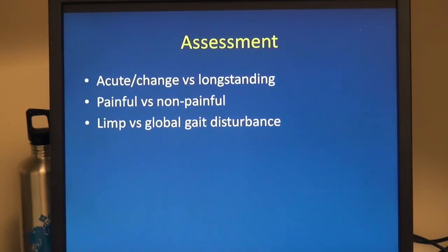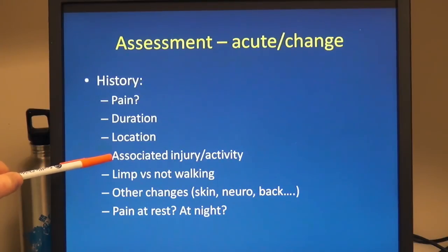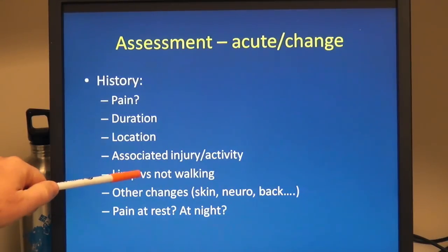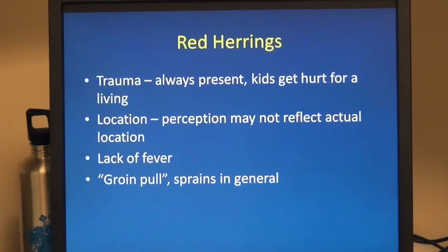It's helpful to look at your history and determine whether this is an acute change or a long-standing gait disturbance. Is it painful or non-painful? Is this a limp or a global gait disturbance? That can often get you into the basic category of your etiology. For the history, we want to know about pain, how long it's been going on, location, any perceived associated injury or activity, whether they're limping or not walking at all, and other changes such as skin or neurologic changes, back exam findings, and whether they're having pain at rest and pain at night.